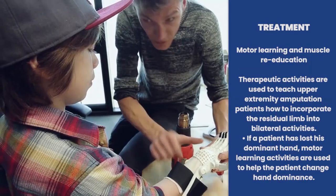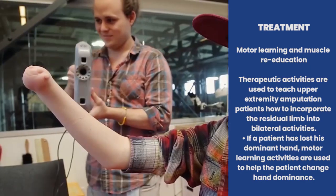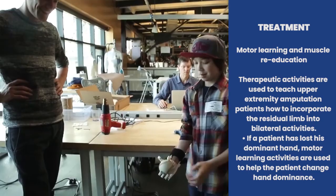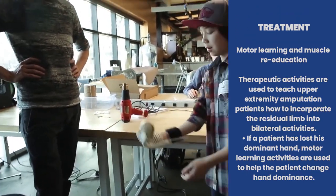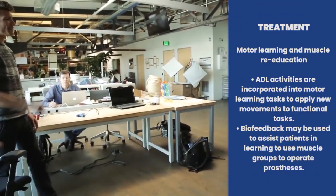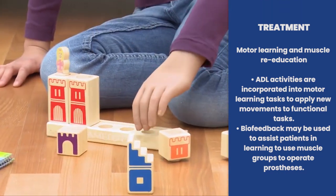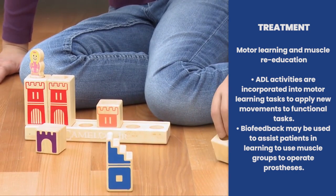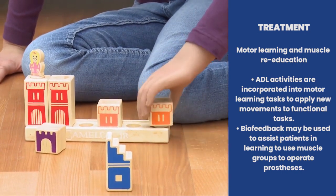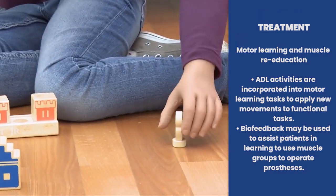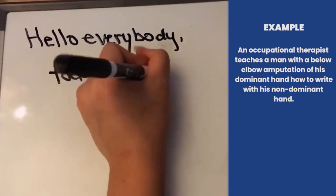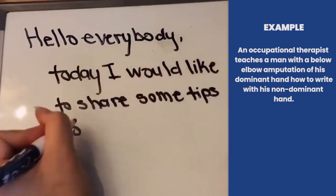Muscle learning and re-education: therapeutic activities teach upper extremity amputation patients how to incorporate the residual limb into bilateral activities. If a patient has lost his dominant hand, motor learning activities help change hand dominance — for example, if he was right-handed, we help him become left-handed. ADL activities are incorporated into motor learning tasks to apply new movement to functional tasks. Biofeedback may be used to assist patients in learning to use muscle groups to operate prosthetics. For example, an OT teaches a man with a below-elbow amputation of his dominant right hand how to write with his non-dominant left hand.